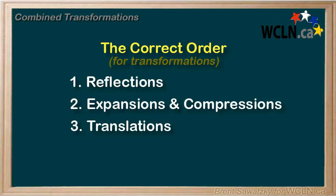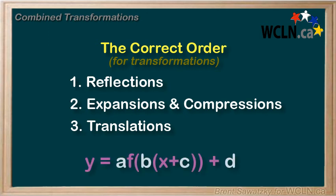Now some people remember it easiest by writing their standard transformation equation like this. And then they just work from left to right or alphabetically as: a the vertical reflection and then expansion or compression, b the horizontal reflection then expansion or compression, c the horizontal translation, and finally d for the vertical translation. Whatever helps you remember it.